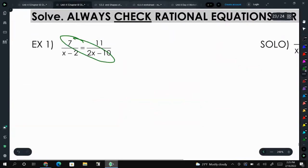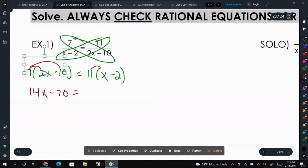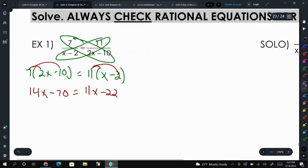So we're going to multiply these two and these two. And you need to remember to multiply everything. So this is going to be 7 times 2x minus 10 equals 11 times x minus 2. That's the biggest mistake you will make when doing this. So then we distribute, and we get 14x minus 70 equals 11x minus 22. And this is a nice linear equation that we all know how to solve.